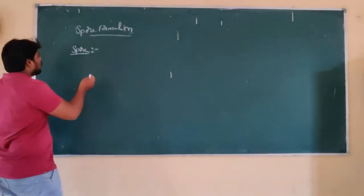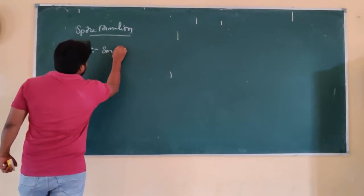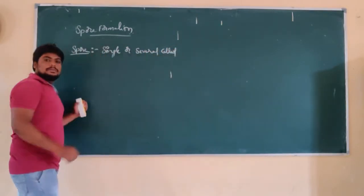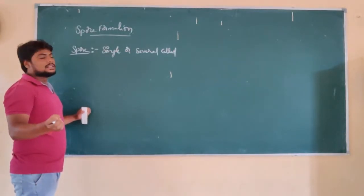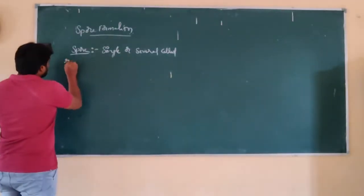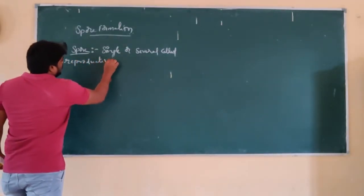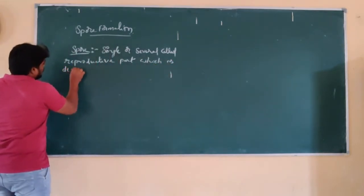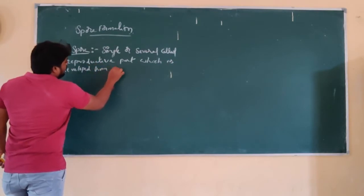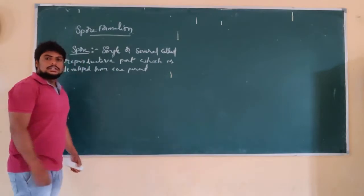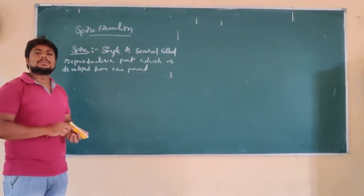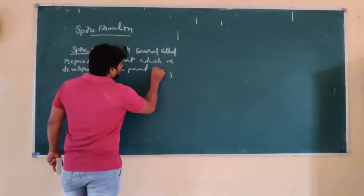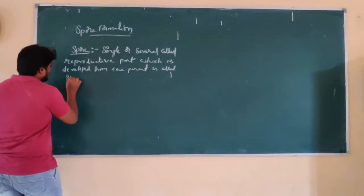So what do we call as a spore? Spore is a single or several cell — either made up of a single cell or many cells — reproductive part which is developed from the parent body. That is what we call as a spore.